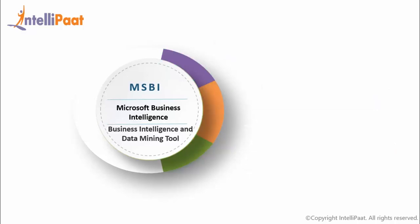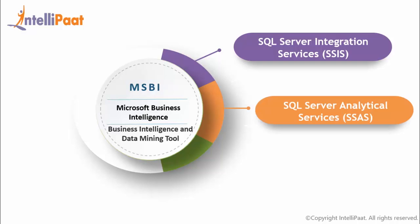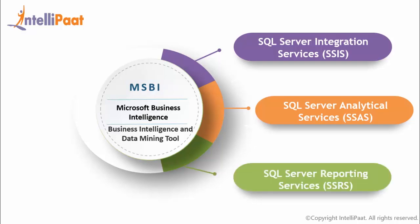MSBI is divided into three categories. First, SQL Server Integration Services (SSIS): a platform for building high-performance data integration and workflow solutions, including extraction, transformation, and loading operations for data warehousing. Second, SQL Server Analysis Services (SSAS): converts two-dimensional rows-and-columns data into a multi-dimensional data model, mainly used to analyze large volumes of data. Third, SQL Server Reporting Services (SSRS): an enterprise reporting platform supporting both traditional and interactive reports delivered over the web, and both dimensional and multi-dimensional data.